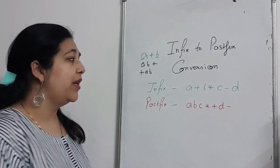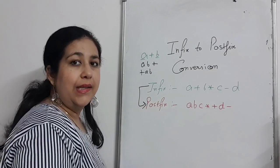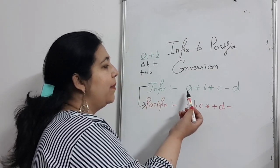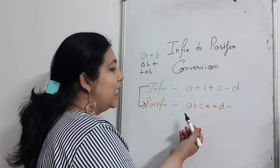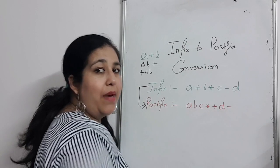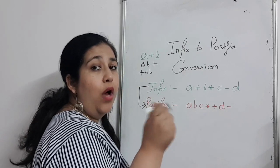We will see infix to postfix conversion. Like this, you can see here, you can write A plus B multiplied by C minus D. This postfix is what is called A, B, C multiplied plus D minus. This is how it is called.